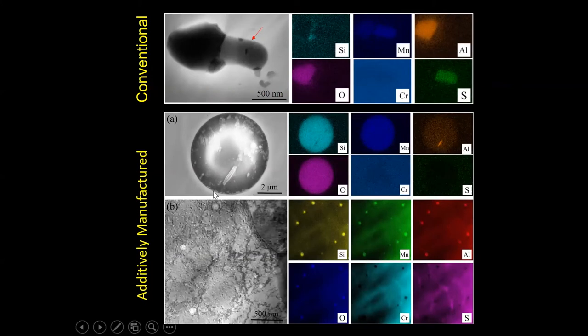Most of the inclusions are spherical in shape and enriched with oxygen, silicon, and manganese, and partly aluminum. It means they are basically oxide inclusions and are not prone to pitting corrosion. The reason for this different inclusion formation is the high solidification rate associated with additive manufacturing, which inhibits the formation of manganese sulfide inclusions.